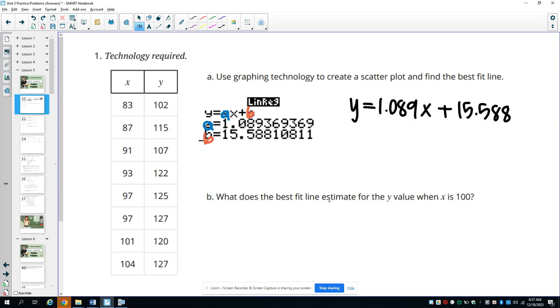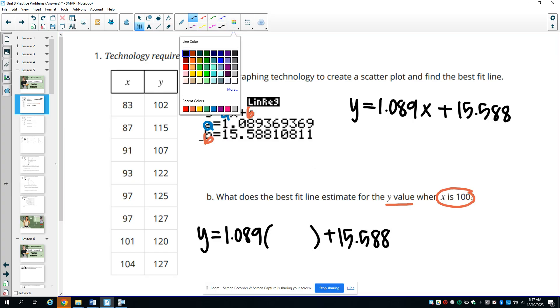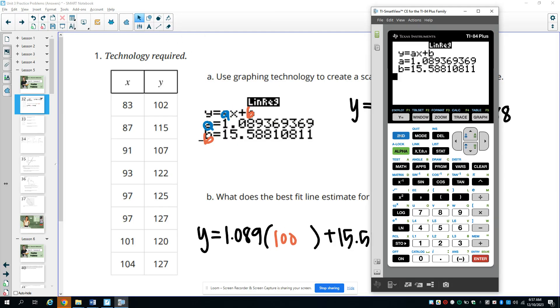What does the best fit line estimate the y value would be when x is 100? So now you actually plug this in. So now you're going to plug 100 in for x. So we're going to put a 100 in there and just calculate this. So we'd have 1.089 times 100 plus 15.588. And that would give us about 124.5.